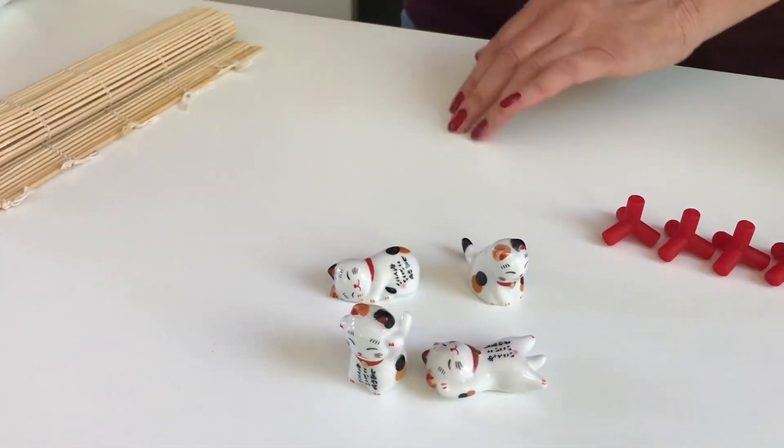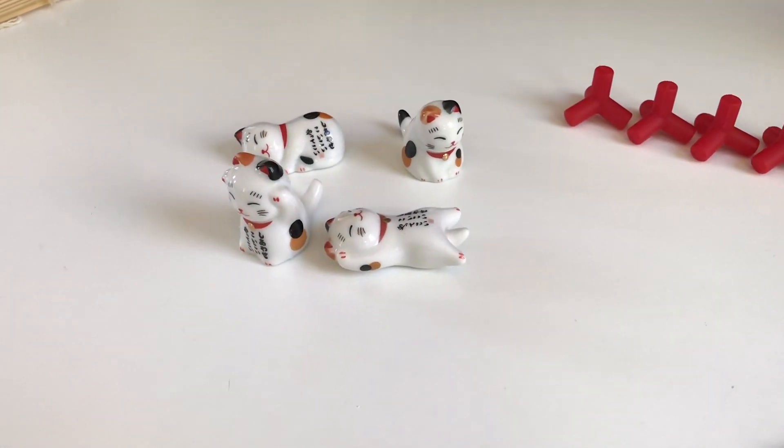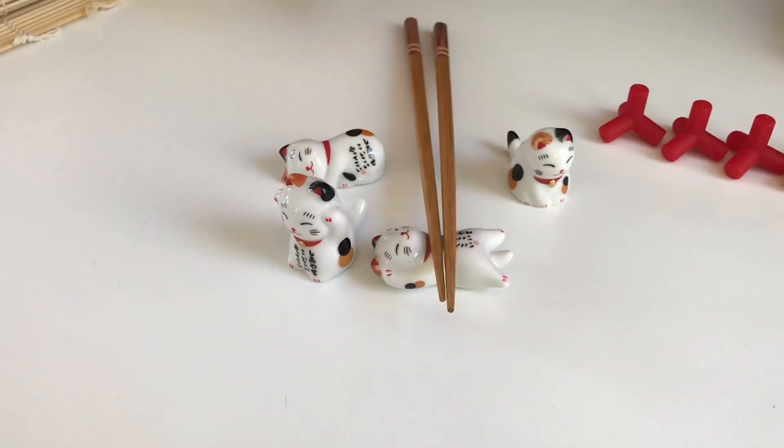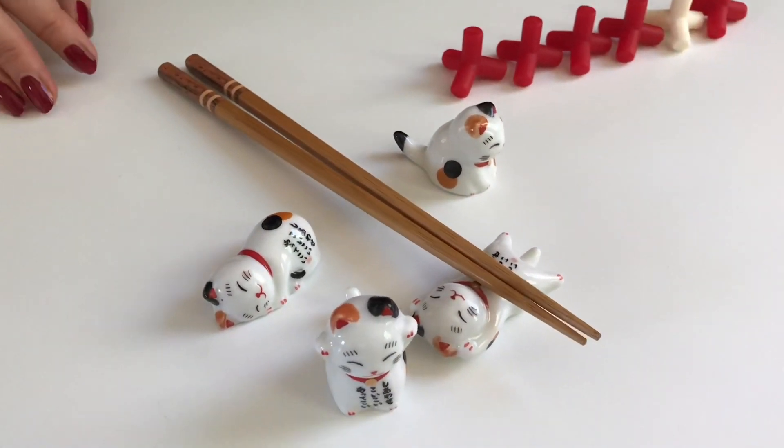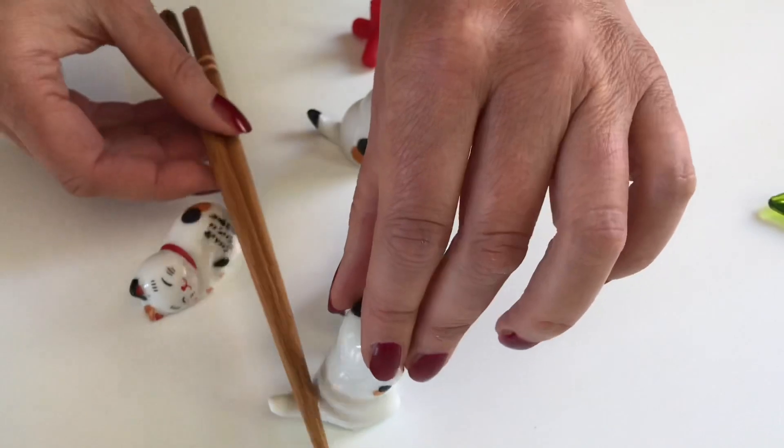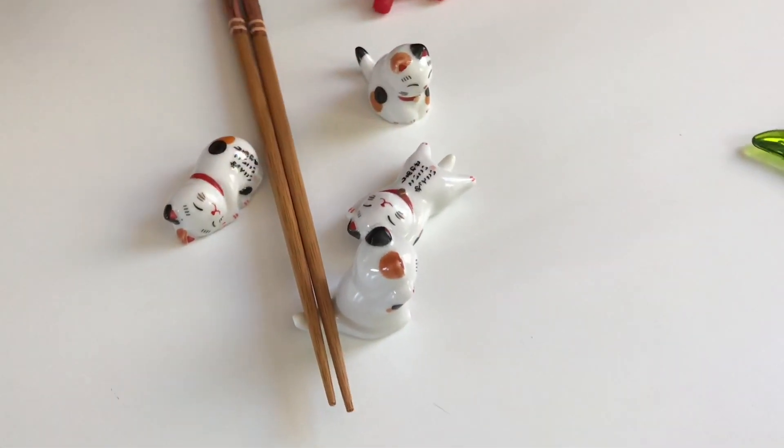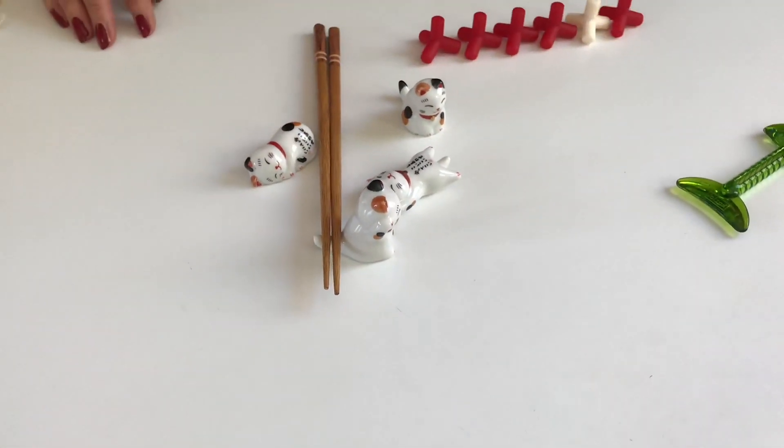Those ones. I like those ones. Look, those are to put your chopsticks down. When you eat and you want to have a little break and you don't want to put it on the table, this is where you place your chopsticks. I found them in Chinatown in New York and I think they are adorable.